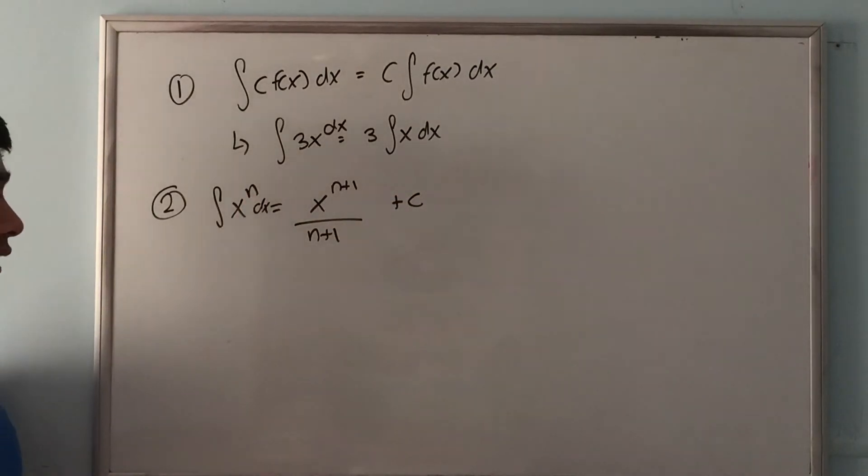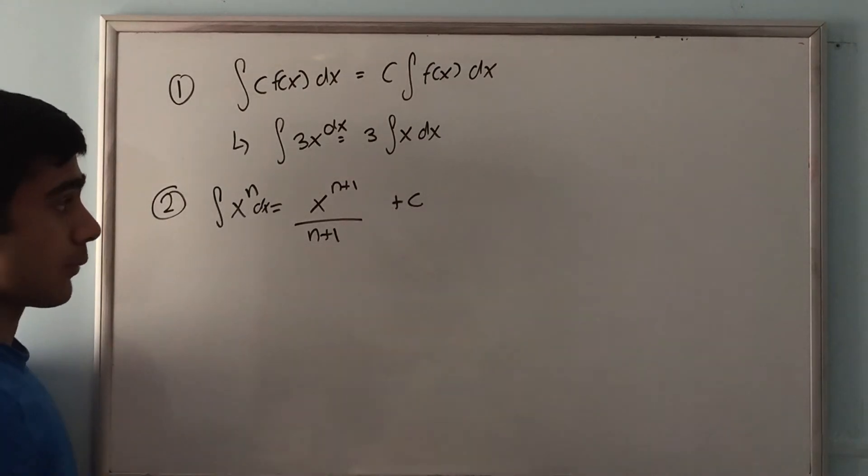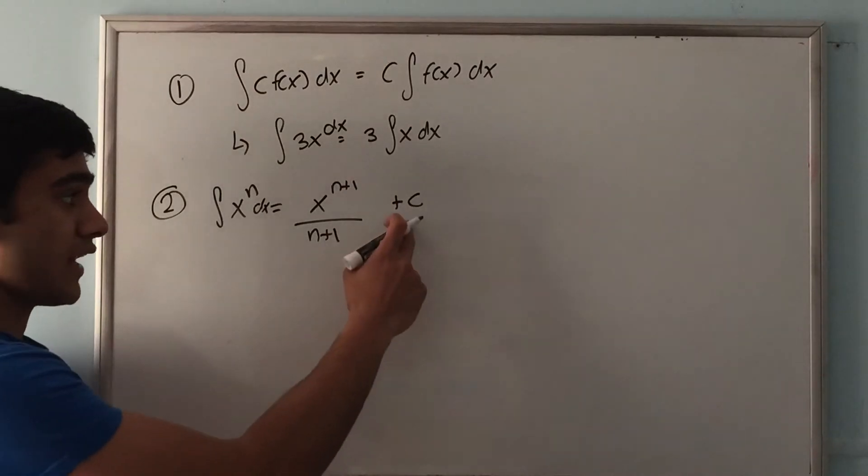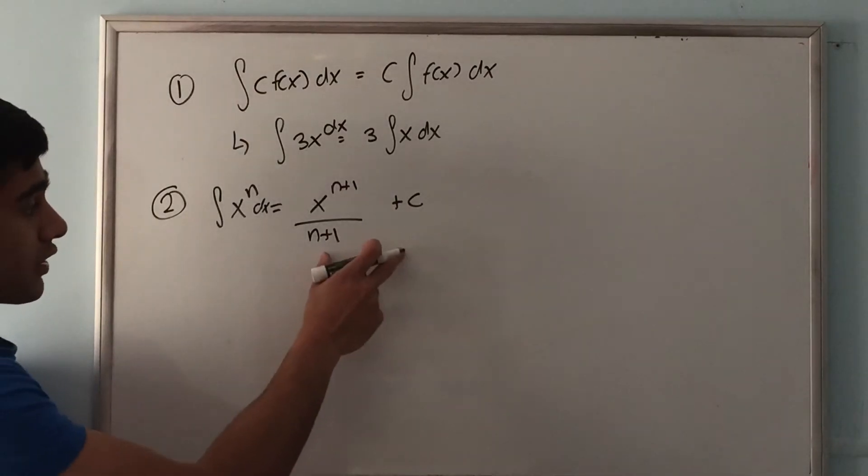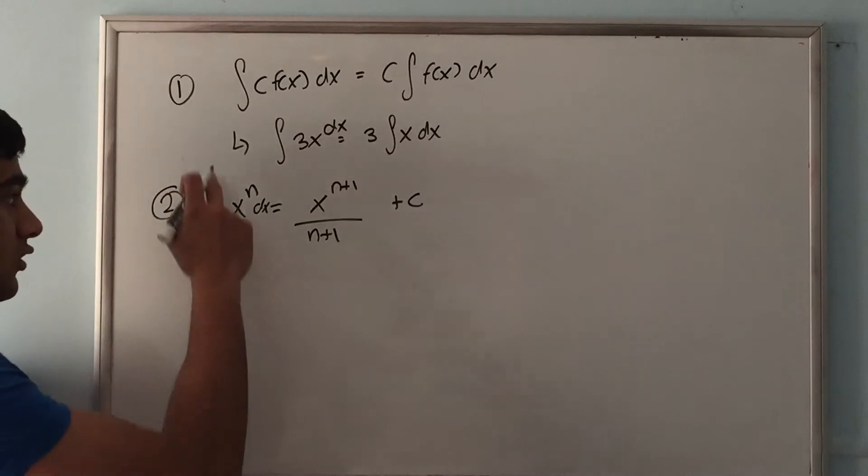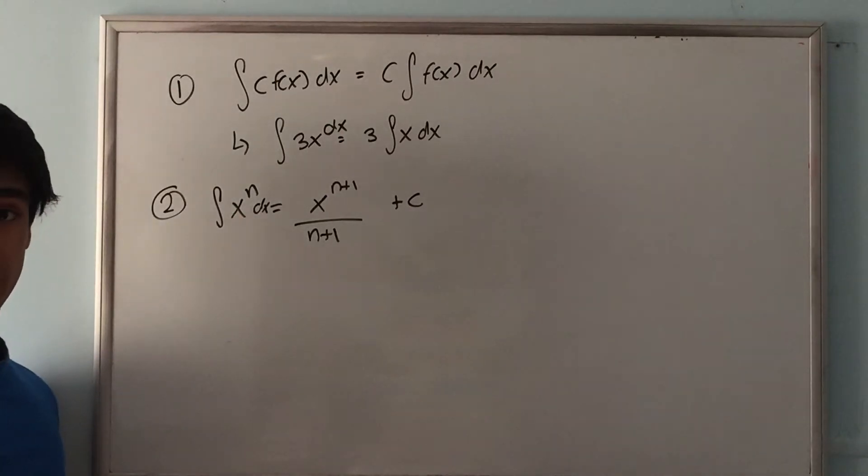Anytime you're taking an integral without bounds you need to have a plus c, because if you remember, the derivative of a constant is 0. So there could be any number here and the derivative of this would equal that. Anytime you're taking an indefinite integral without any numbers here or here, we need a plus c constant.